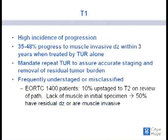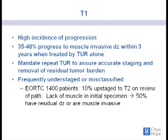When we move into the T1 category, this has a very high incidence of progression into muscle-invasive disease and beyond. Up to 50% of patients diagnosed with T1 disease will develop muscle-invasive disease within three years when treated with resection alone. A second-look TUR is usually indicated, especially if there's no muscle in the specimen. In a large ERTC study of 1,400 patients, 10% were upstaged to T2 on pathology review, and up to 50% of patients without muscle in the initial specimen had residual or muscle-invasive disease on repeat evaluation.